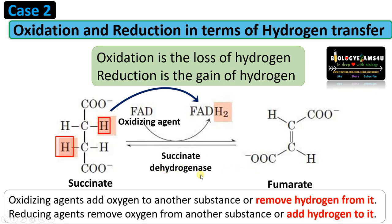The enzyme is succinate dehydrogenase, as 2 hydrogen atoms are removed from succinate and donated to FAD to form FADH₂. Here the oxidizing agent that receives hydrogen from succinate is FAD, so FAD is the oxidizing agent. Whereas the reducing agent is succinate, which adds hydrogen to FAD forming FADH₂. As you see, oxidation and reduction reactions are coupled.